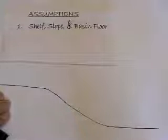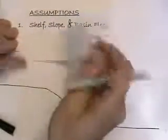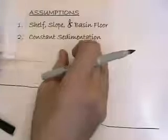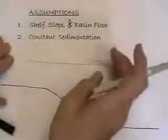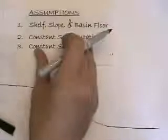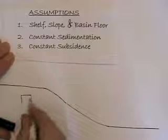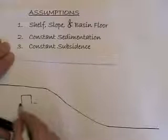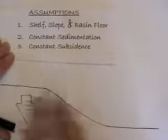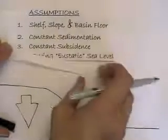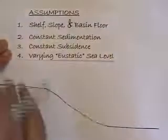I'm going to also assume for this time period that there's constant sedimentation across this shelf. I'm going to assume a constant subsidence for shelf margin and basin. There's the constant subsidence. And I'm going to be varying eustatic sea level at this time.